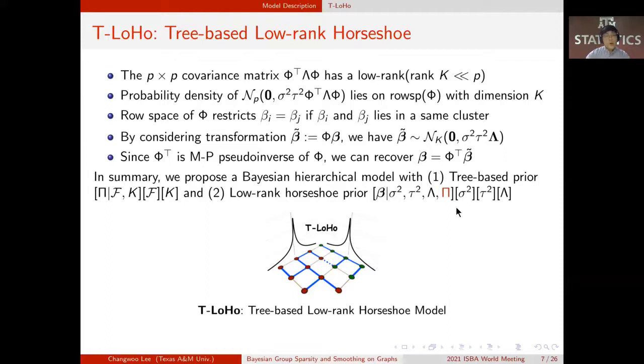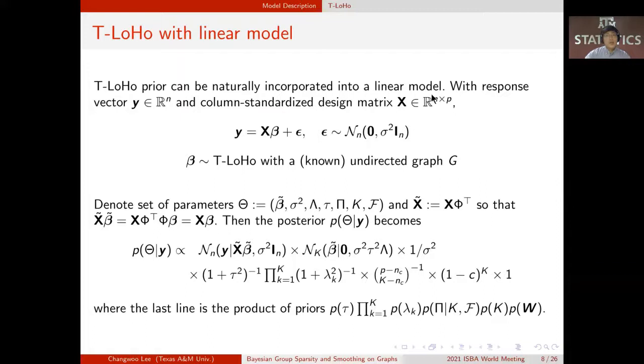and a low rank horseshoe prior conditional on the pi. So combining those, we call our model T-LoHo, tree-based low rank horseshoe model. T-LoHo can be naturally incorporated into a linear model. With an undirected graph G, which is known, we can write the model as follows. Now,